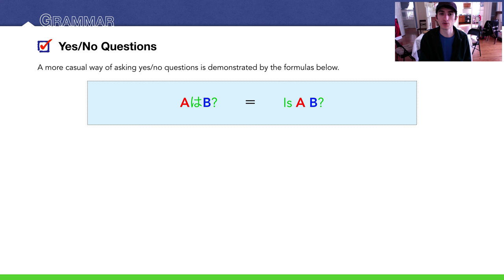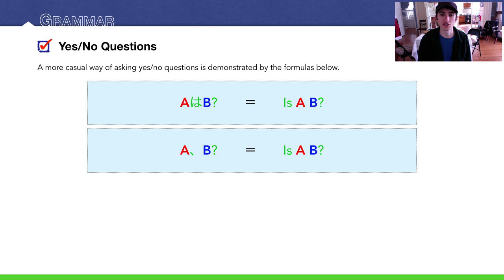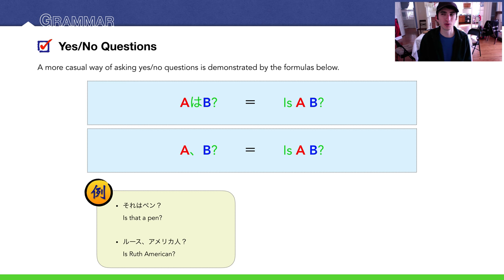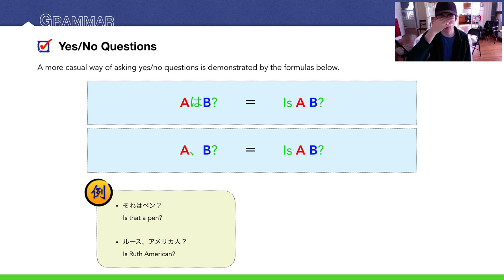Here's a more casual way of asking: A は B？ or just A B？ — raising your voice at the end to signal a question. For example: それはペン？ or Ruth、アメリカ人？ Be careful to raise your voice to make it clear it's a question.